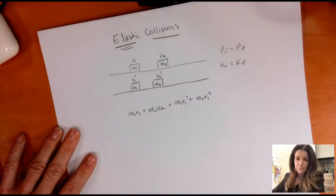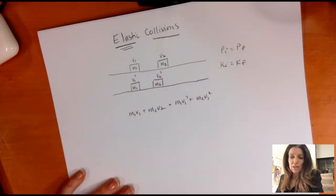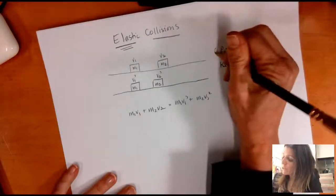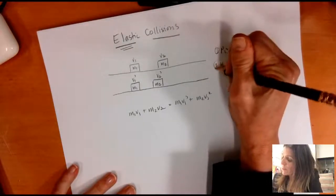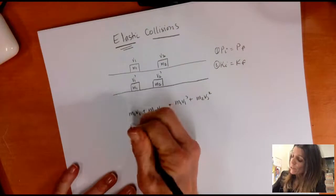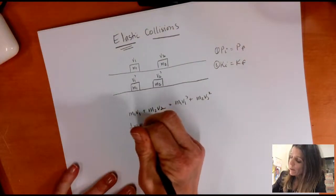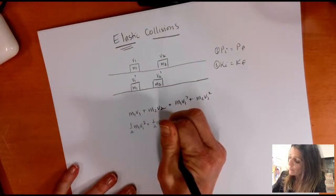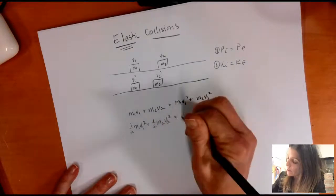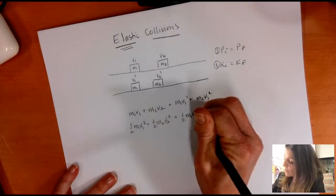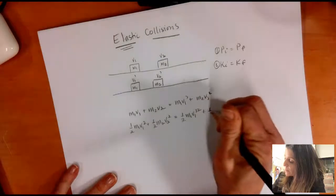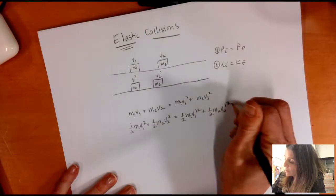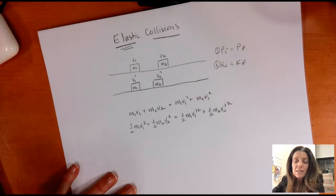That's it for the momentum equation. From equation two — the kinetic energy equation — I get one-half M1 V1 squared plus one-half M2 V2 squared equals one-half M1 V1 prime squared plus one-half M2 V2 prime squared. The idea is that you know V1 and V2 — you don't know V1 prime and V2 prime. I have two unknowns and two equations.